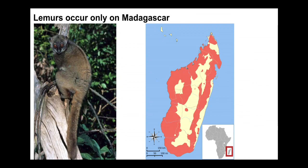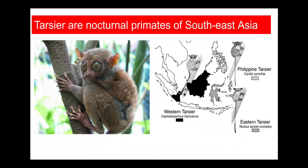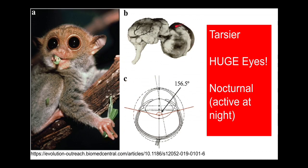Lemurs occur only in Madagascar. They are primates — relatives of monkeys and apes — but more distantly related, as we've known for a long time using anatomical evidence. Tarsiers are nocturnal primates of Southeast Asia that have very huge eyeballs. Their eyeballs are actually bigger than their brains, and this brain stem arrangement with oversized eyes facilitates capturing limited light and allowing them to see.